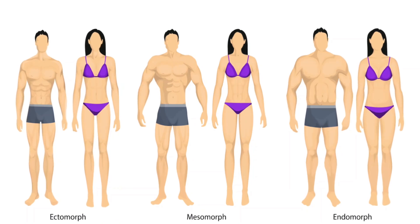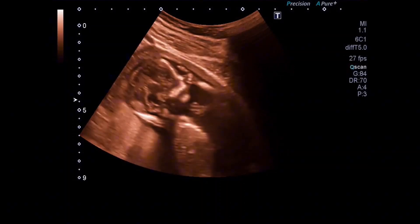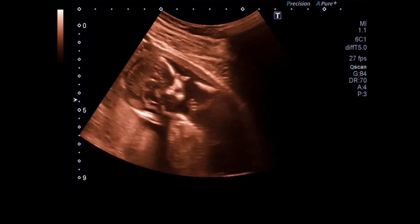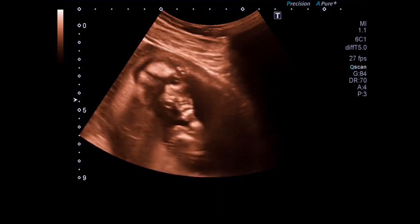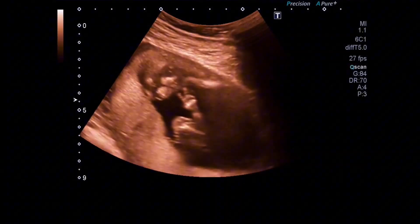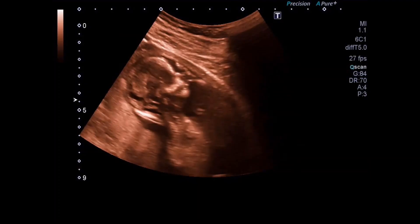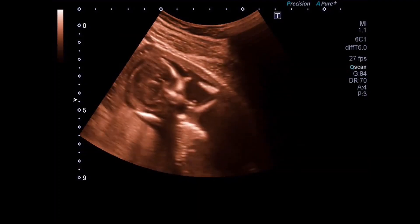The theory behind body types came in the 1940s from the American psychologist — notice I didn't say physiologist, I said psychologist — William Herbert Sheldon, who used visual examination to classify the human physique according to the relative contribution of three fundamental elements named after the three germ layers of embryonic development.